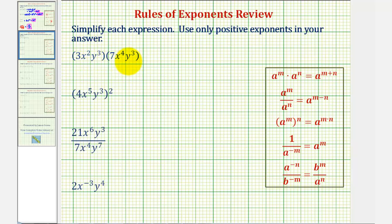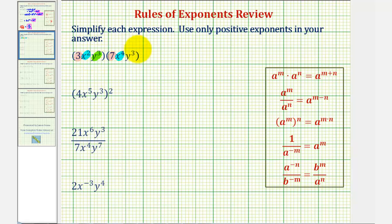Because all this is being multiplied together, we could change the order and write the coefficients next to each other, the x's next to each other, and the y's next to each other. Or we could leave it in its current form and find the product of three and seven, then find the product of x to the second and x to the fourth, and then find the product of y to the third and y to the third.